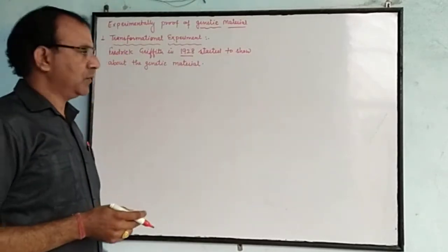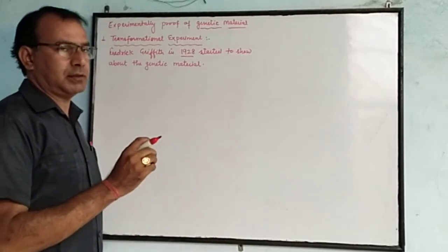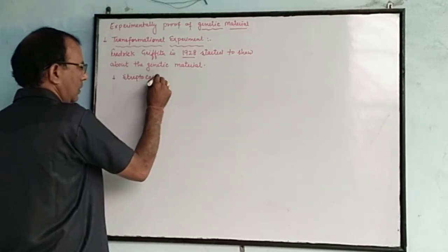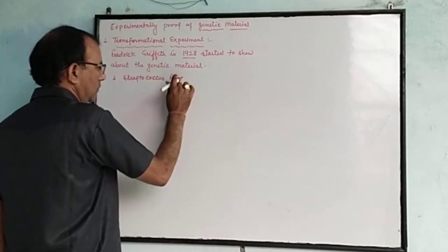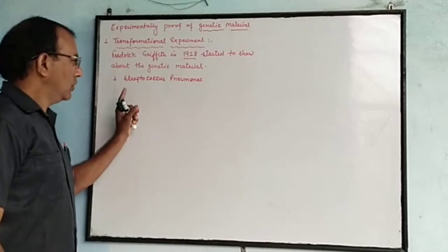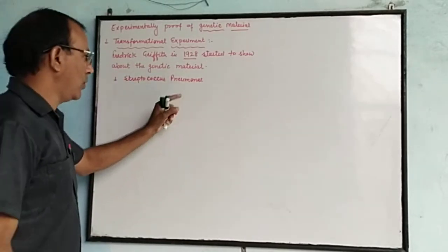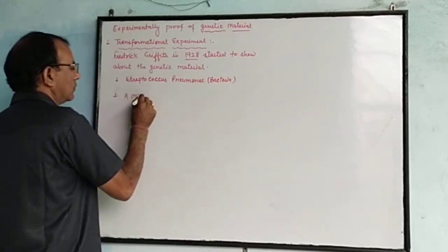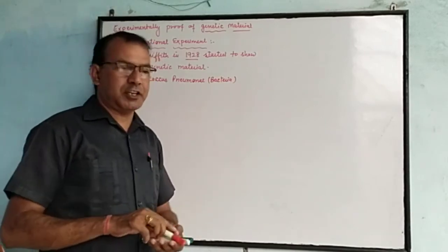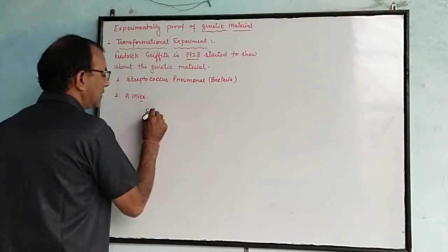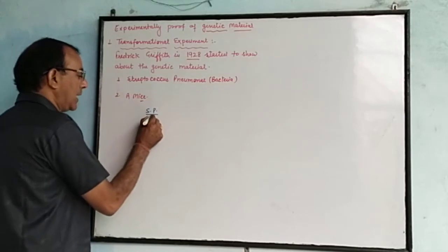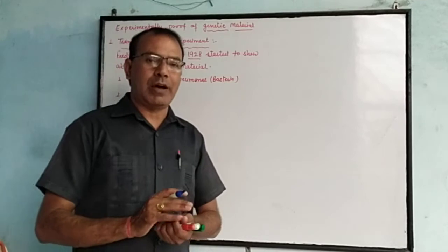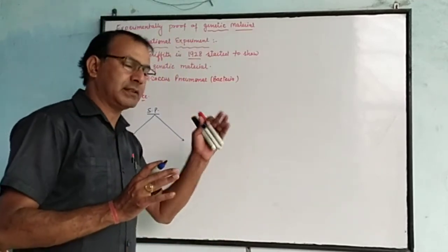Griffith chose two main things for his experiment. The first one is the bacteria Streptococcus pneumoniae. Streptococcus pneumoniae bacteria is of two types. Some Streptococcus pneumoniae bacteria show a capsule covered with polysaccharide — that is called smooth, which is very virulent. Virulent means it acts as a pathogen — a parasite which may cause disease.